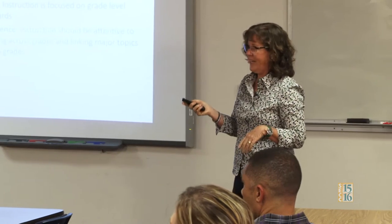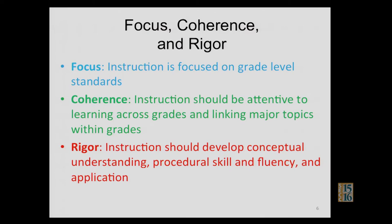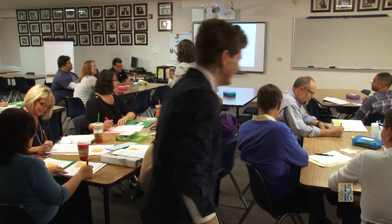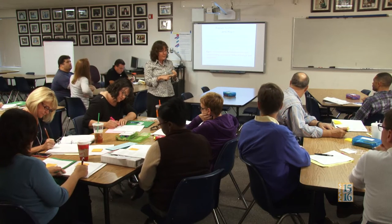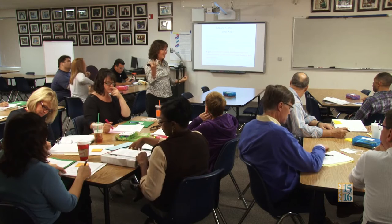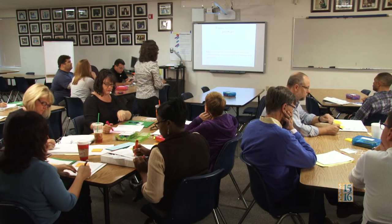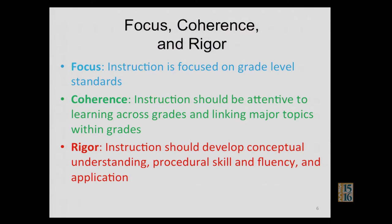So when you do the standard algorithm, there should be division understanding. And then the last one — this R word does not mean harder. The idea of rigor in the Common Core says instruction should develop conceptual understanding — understanding things at a deep level, being able to make connections. Procedural skill and fluency — we're not letting go of that, we're just balancing it out. And then application: the big idea that you know something, now how do you apply it to real situations?